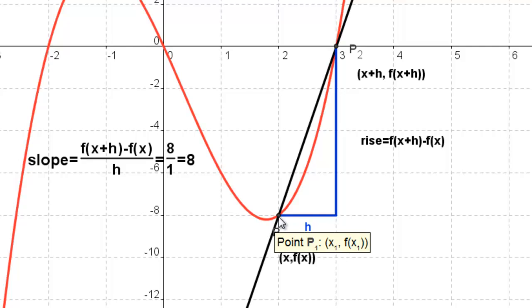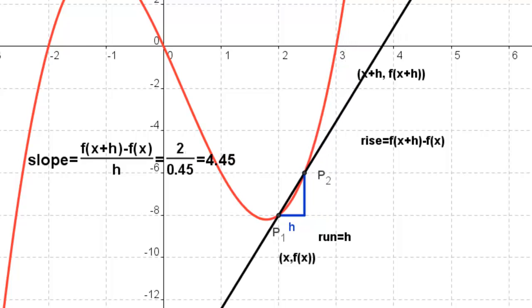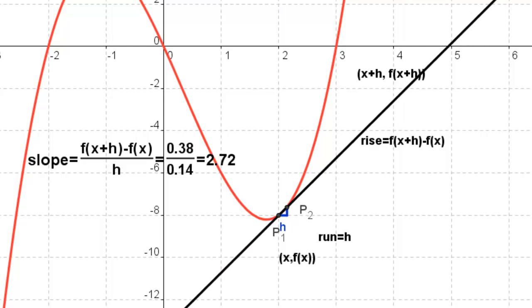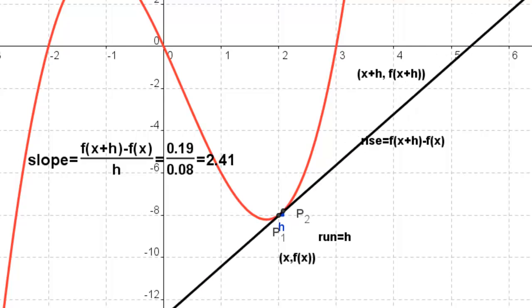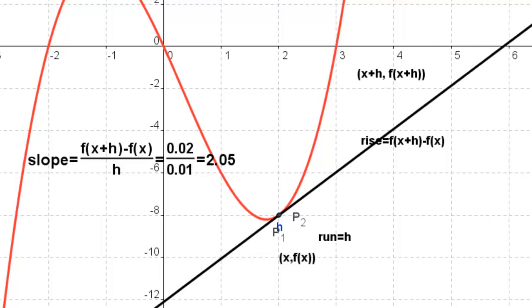So what I'm going to do is, I'm going to start to shrink this h down, I'm going to bring it over. I'm going to shrink the h down, down, down, and I am happy as a clam because it looks like I'm closing in on that instantaneous rate of change. It's getting closer and closer to 2.3, 2.25, I think I know where it's going, and it's almost there.